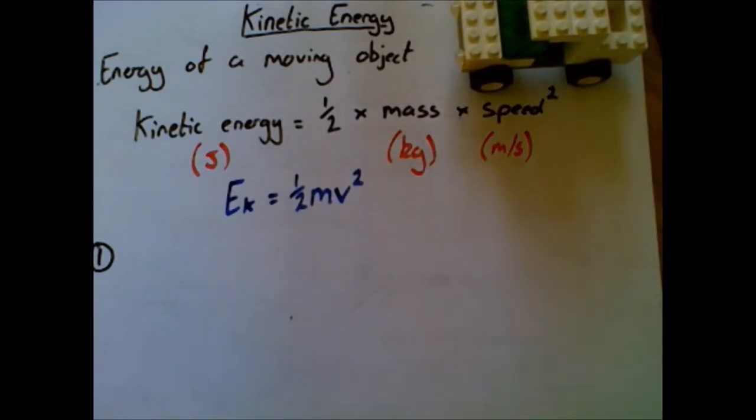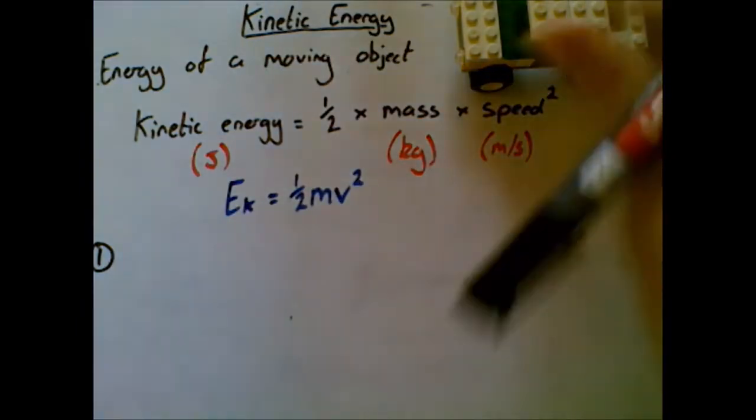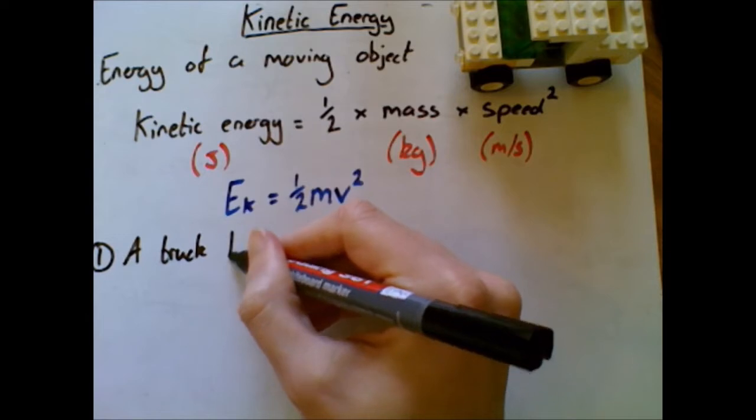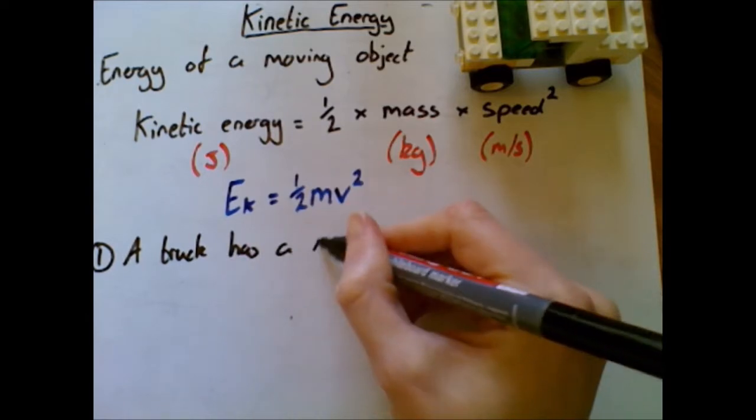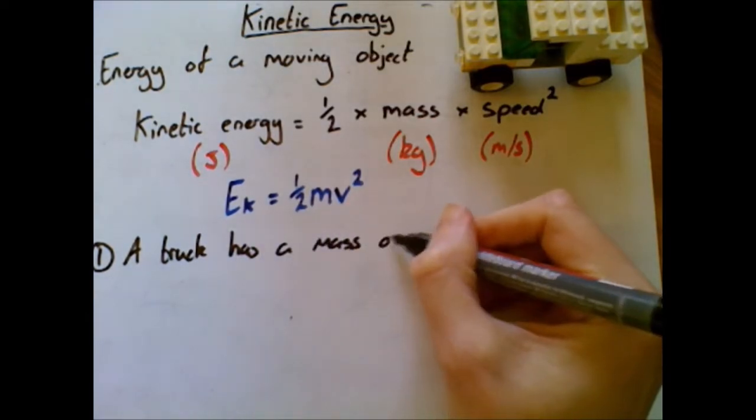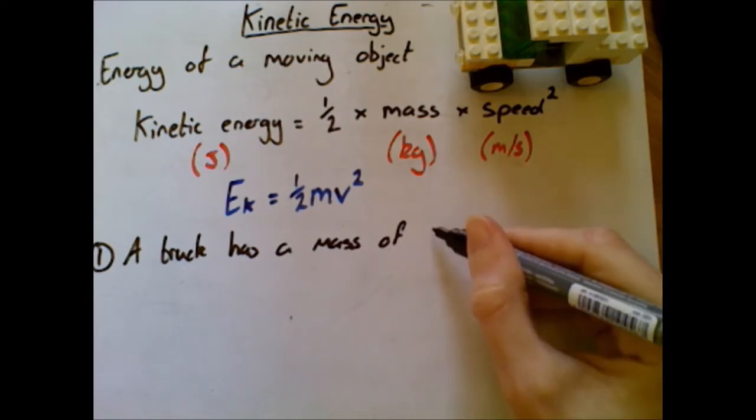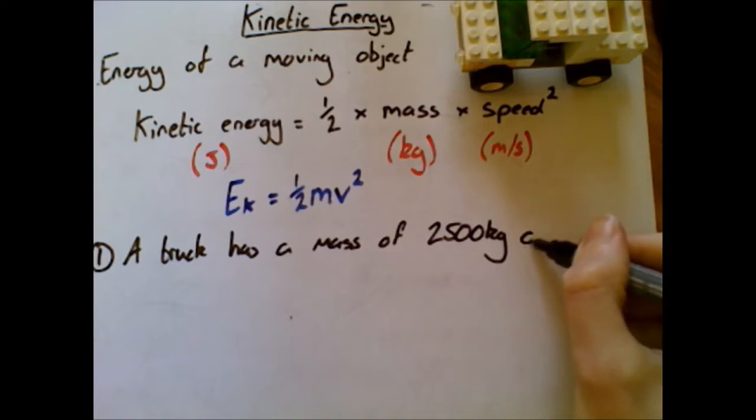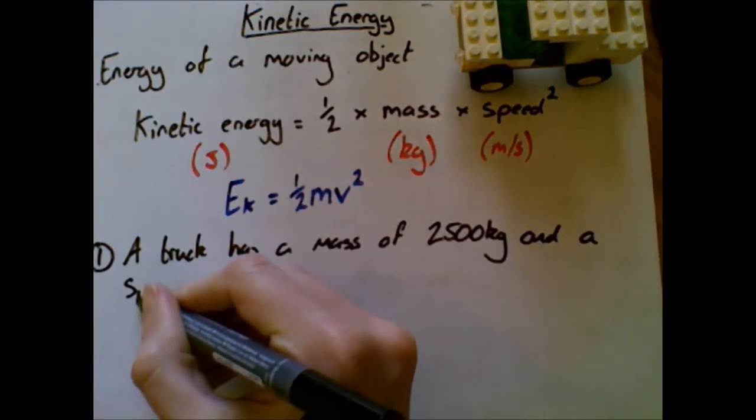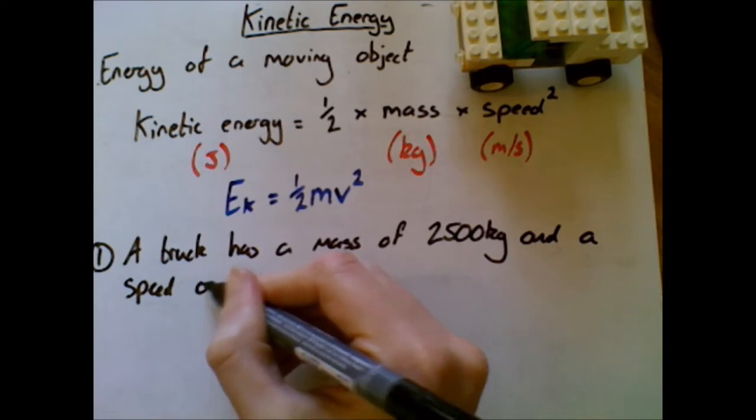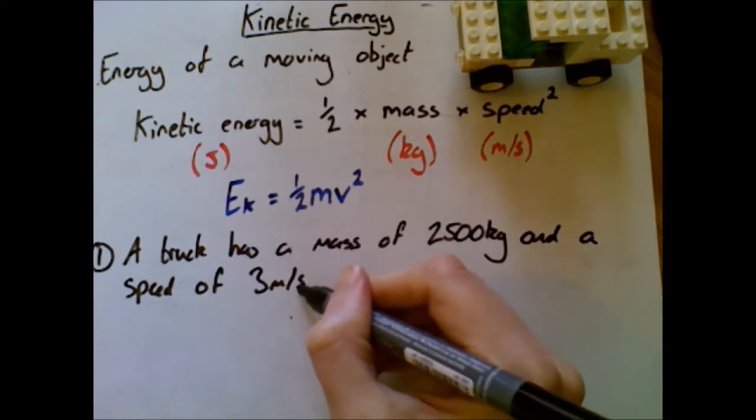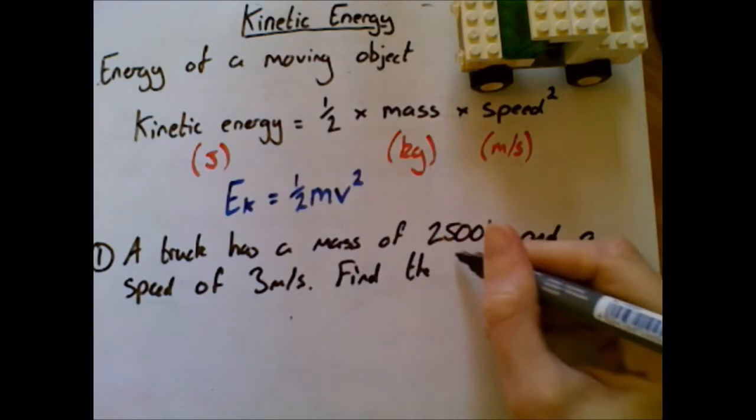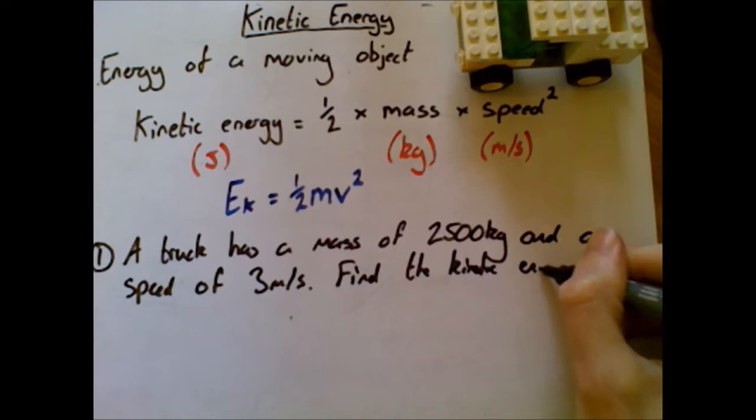Let's look at our first example. Let's go back to this truck we had right back when we were talking about momentum. Let's just say that our truck has a mass of 2500 kilograms and a speed of three meters per second. Find the kinetic energy.